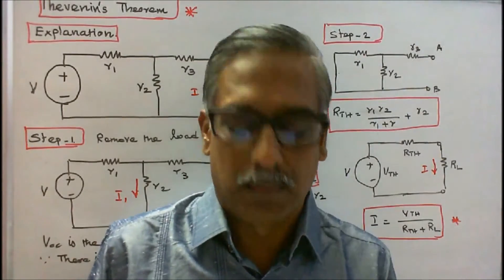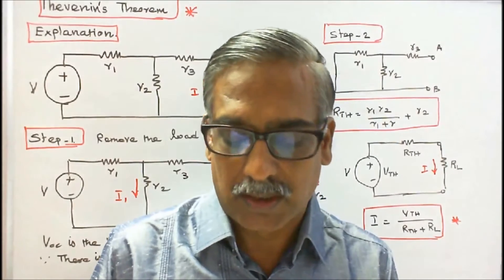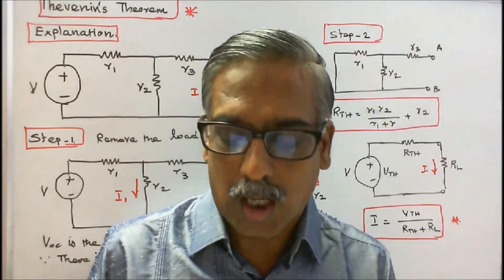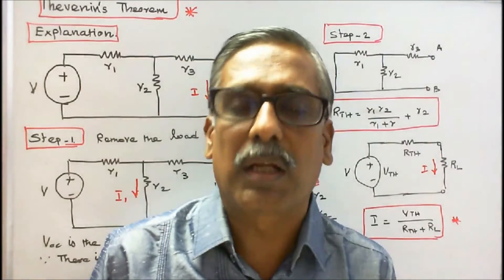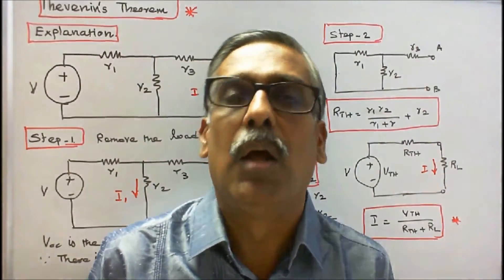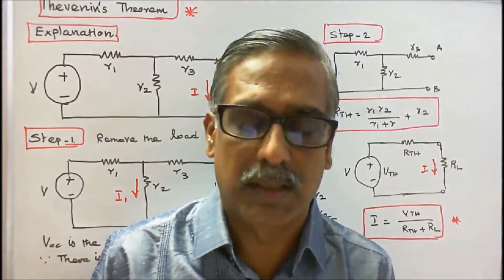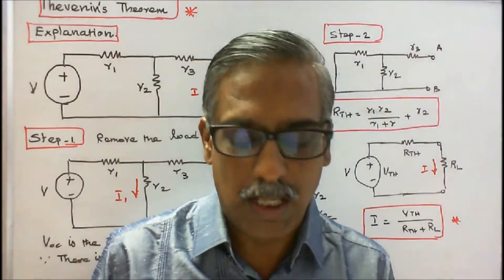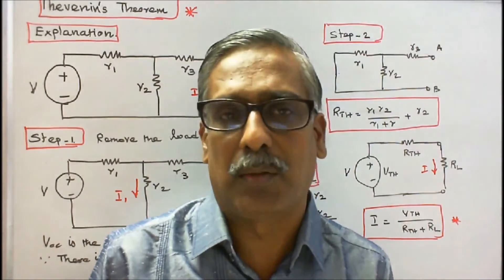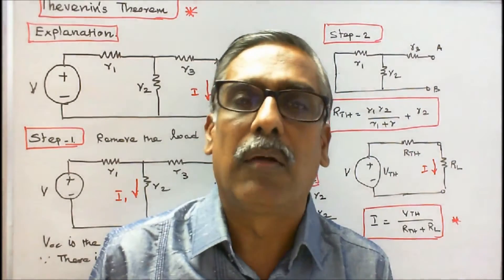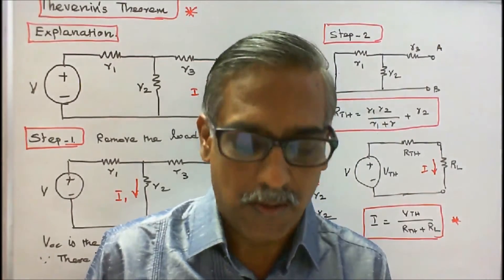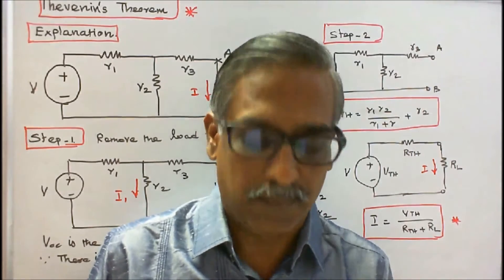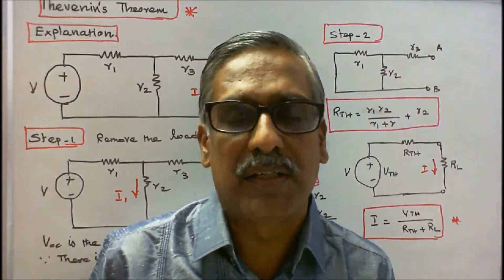Applications of Thevenin's Theorem. Number 1: This theorem is extensively used in networks to determine the current through any element or voltage across any element in a network without rigorous calculations for solving a set of network equations. Number 2: It is useful in circuit analysis when it is necessary to find the current only in one branch of a circuit. Number 3: It is also useful when it is necessary to study the variation in current in a branch when the resistance of that branch is varied.